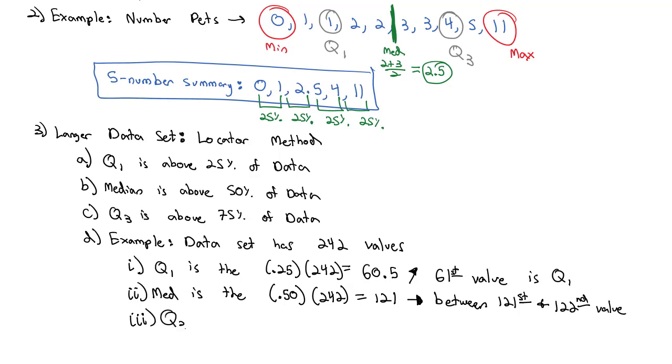Let's find the location of Q3. Q3 is above 75%, so we take 75% times the 242 values. When we do that, we get 181.5, and like I said, we'll round that up. It's the 182nd value in the data set is Q3, or the third quartile. And then obviously the minimum and the max we can pull off directly from whichever one's the biggest or the smallest.